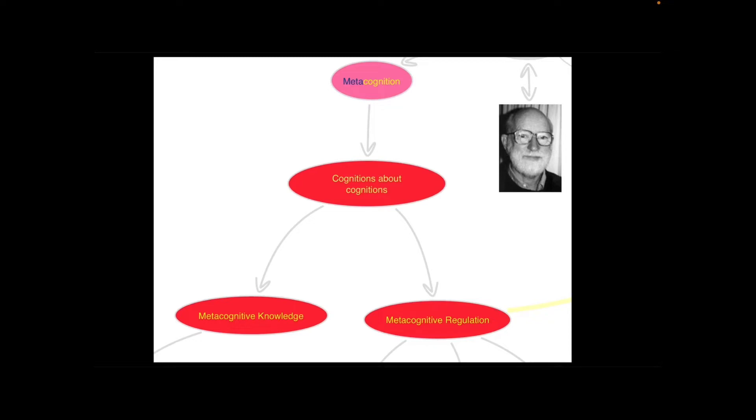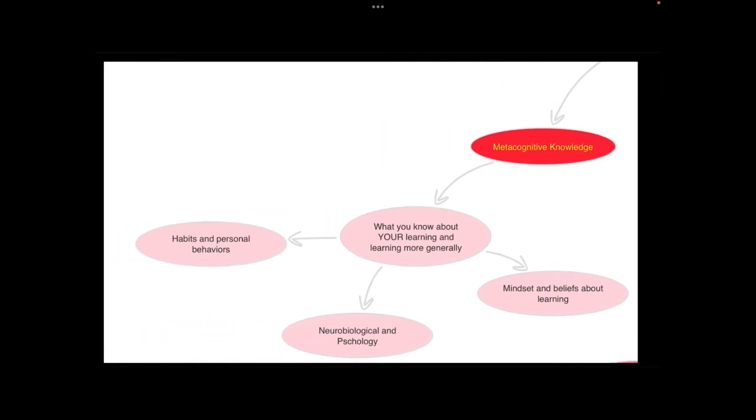Now Flavel's model of metacognition had two key components. One was metacognitive knowledge and one was metacognitive regulation. Metacognitive knowledge has to do with all of those things that you know about learning, both from yourself and learning more generally like cultural knowledge.